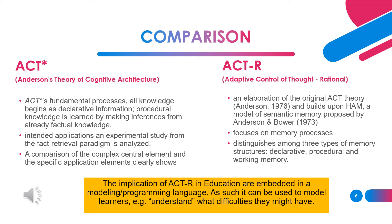While Adaptive Control of Thought, Rational, or ACT-R, is an elaboration of the original ACT theory and builds upon HAP, a model of semantic memory proposed by Anderson and Bower. It focuses on memory processes and distinguishes among three types of memory structures: declarative memory, procedural memory, and working memory. The implications of ACT-R in education are embedded in the modeling program language, and it can be used to model learners to understand what difficulties they might have.